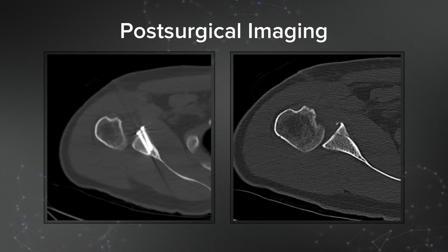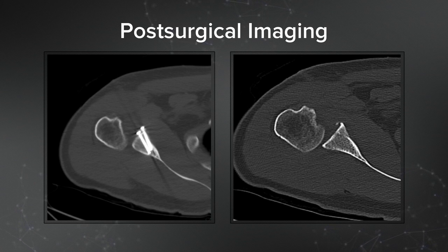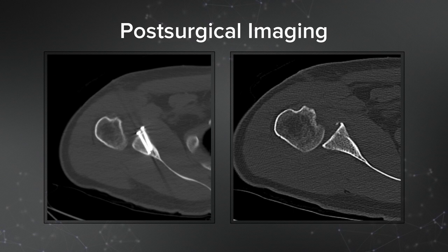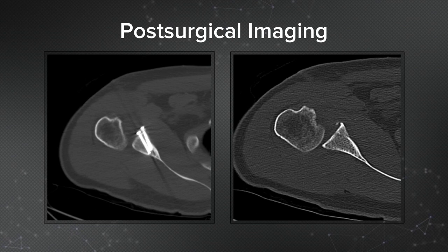For this patient I obtained post-surgical imaging. Here's a CT scan — you can see on the right there's an anatomic reduction of the glenoid, and you can see the screw trajectory. Typically the screw trajectory is going to be from lateral to medial more than anterior to posterior, and you can see that in the CT scan.